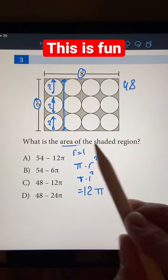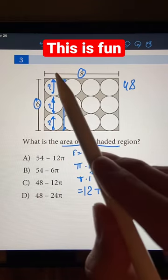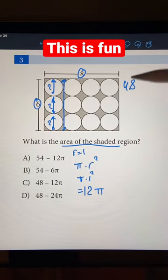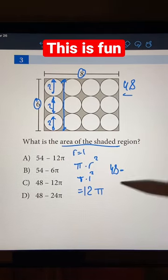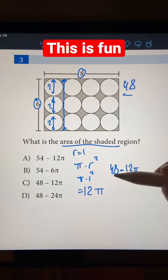And the area of the shaded region is just the area of the rectangle minus all of the areas of the circles. So that's just 48 minus 12 pi, which is C.